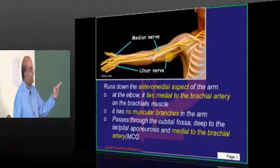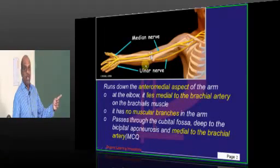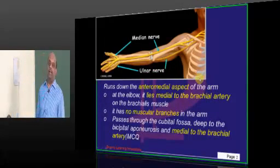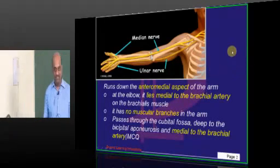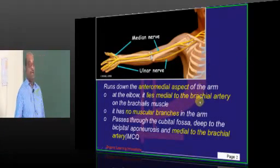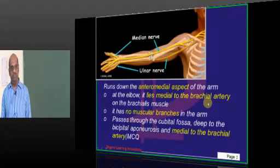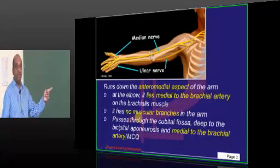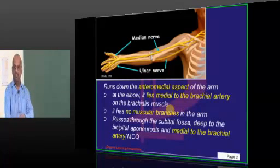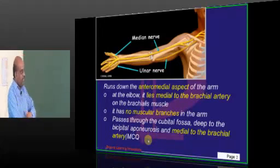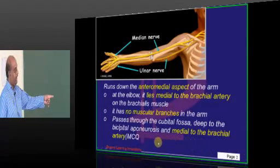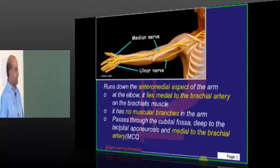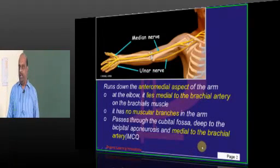So it is called laborer's nerve. It runs along the anteromedial aspect of the arm and at the elbow while passing through the cubital fossa, what is its relation with brachial artery is the favorite question of the examiner. Typically it lies medial to the brachial artery. Then in the arm it has no branches, thank God. Then it passes through the cubital fossa deep to the bicipital aponeurosis. It is not superficial, it is deep. And there it lies medial to the brachial artery.